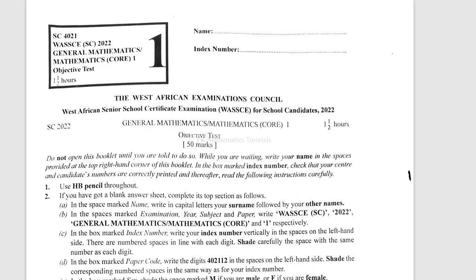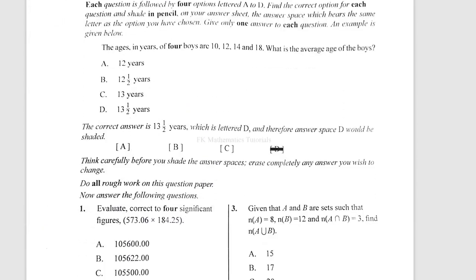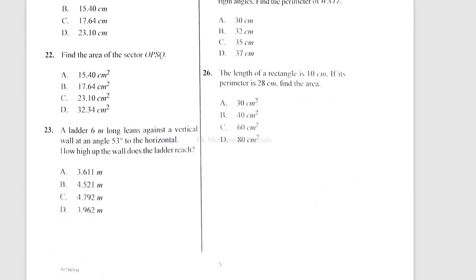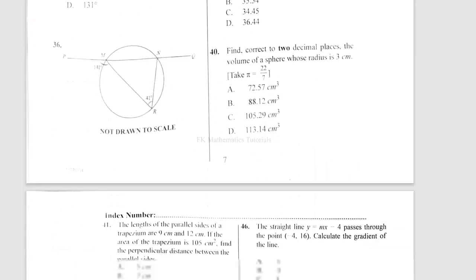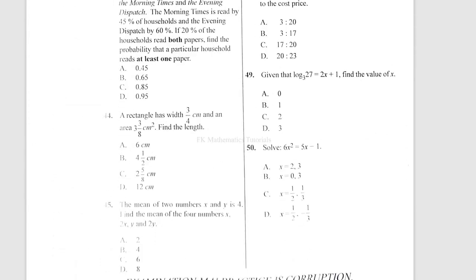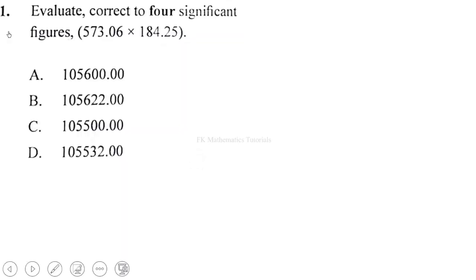Hello, let us please now take a look at the WASSCE 2022 June Mathematics Paper 1. We'll be solving this paper 10 questions at a time. In this video we'll be looking at questions 1 to 10, then continuing with 11 to 20, 21 to 30, and finally 41 to 50. The first question: evaluate correct to four significant figures 573.06 times 184.25.